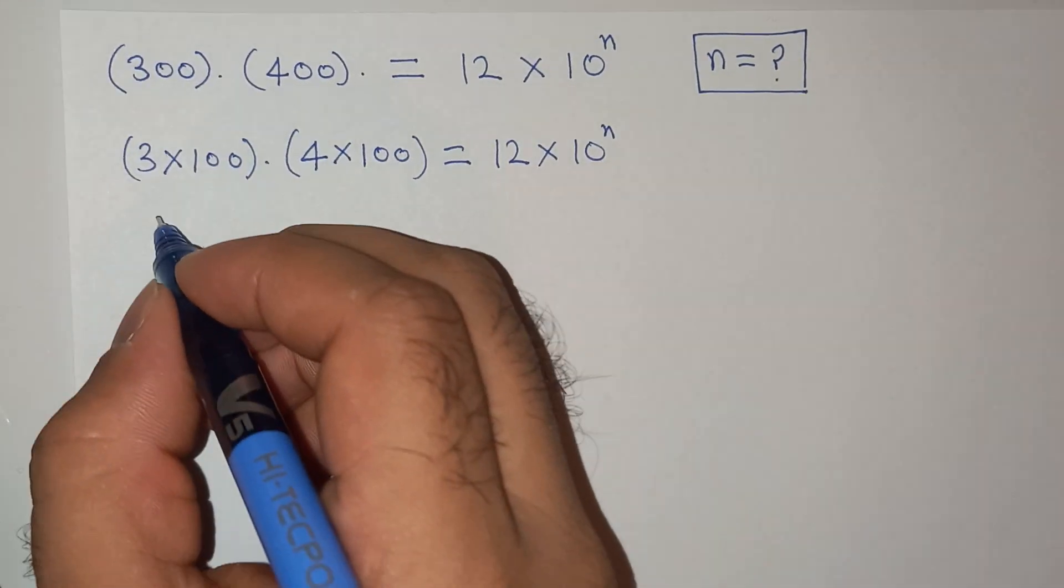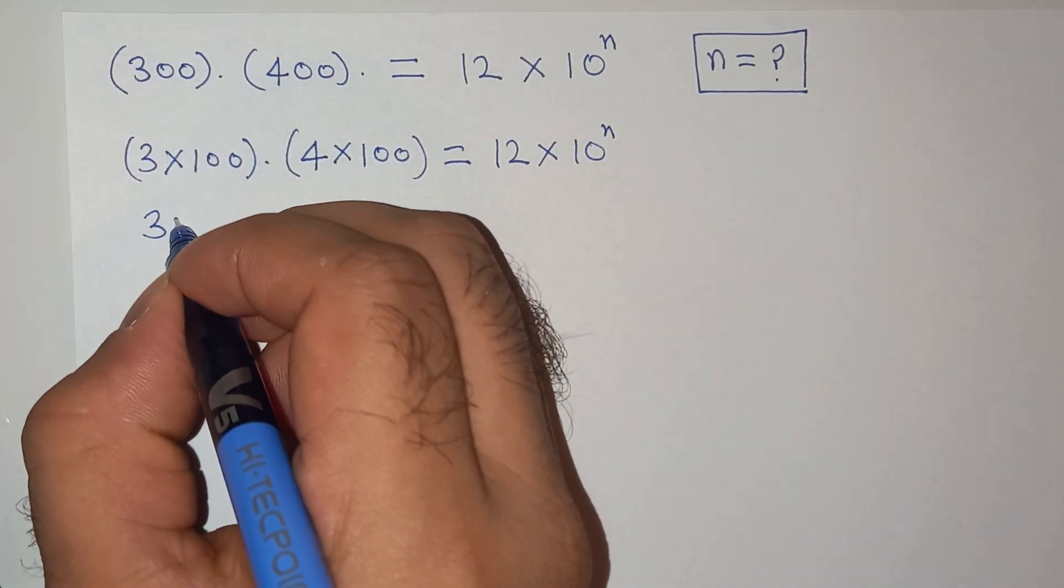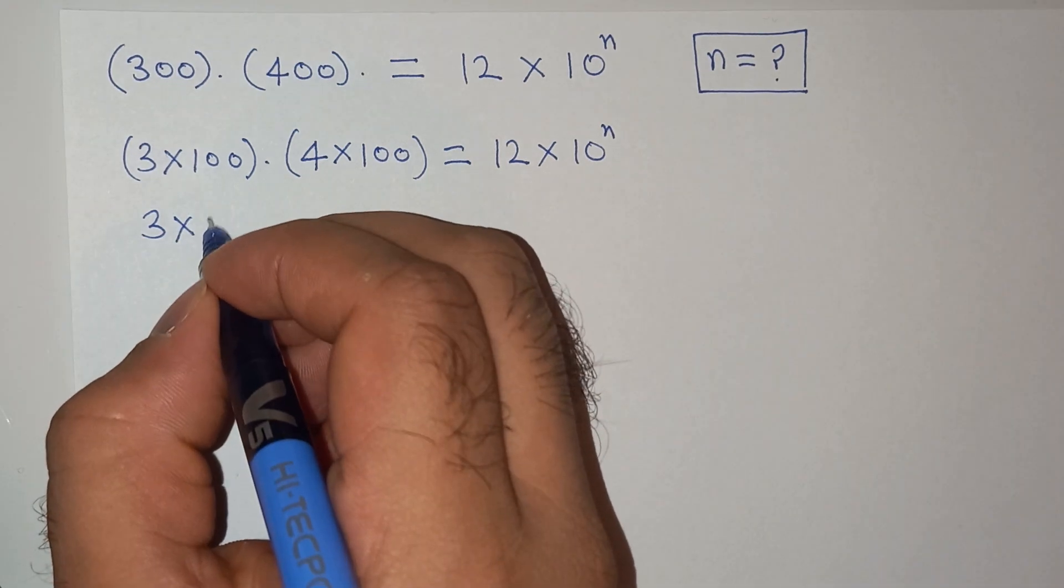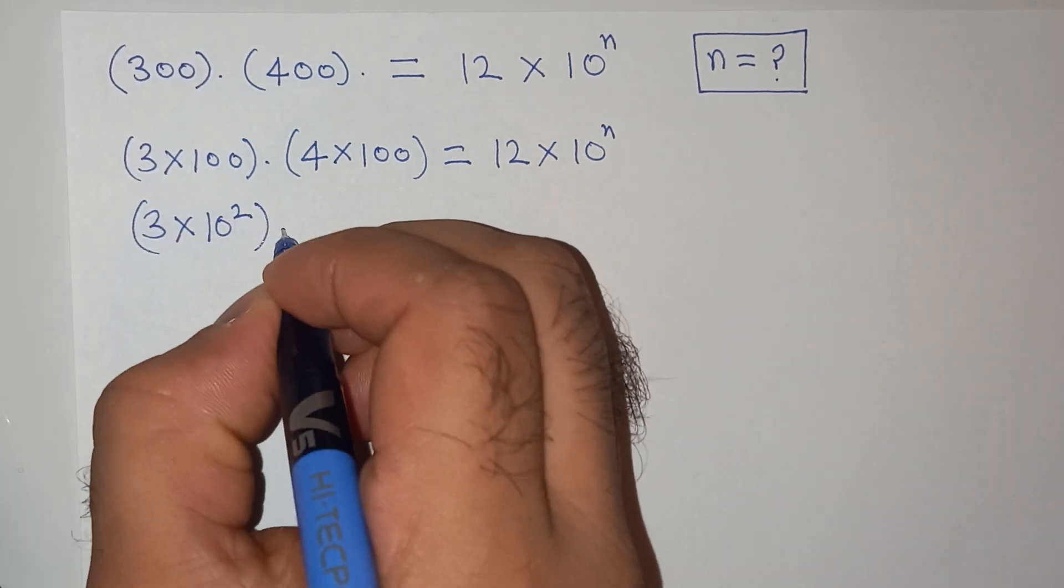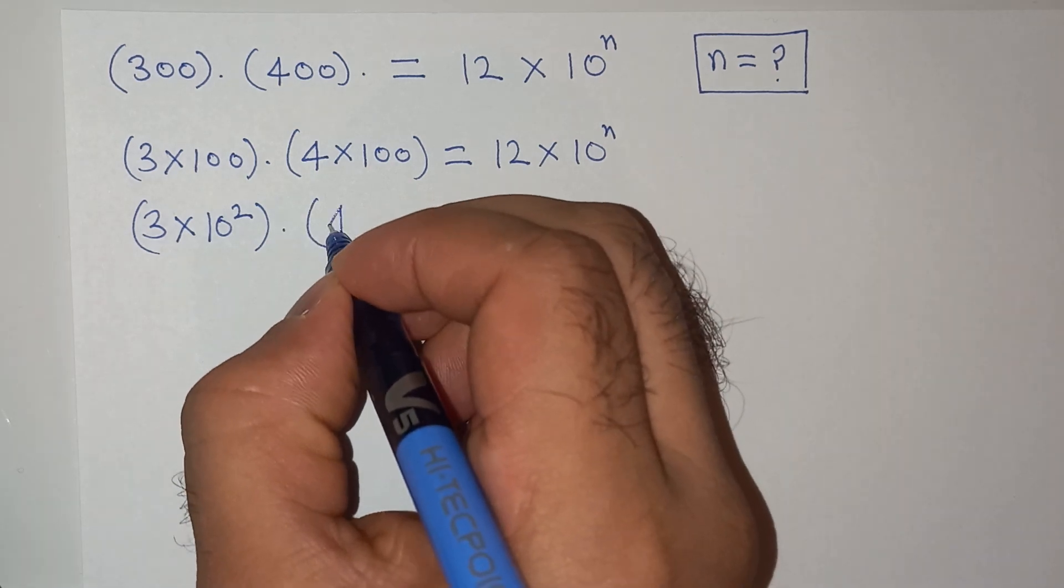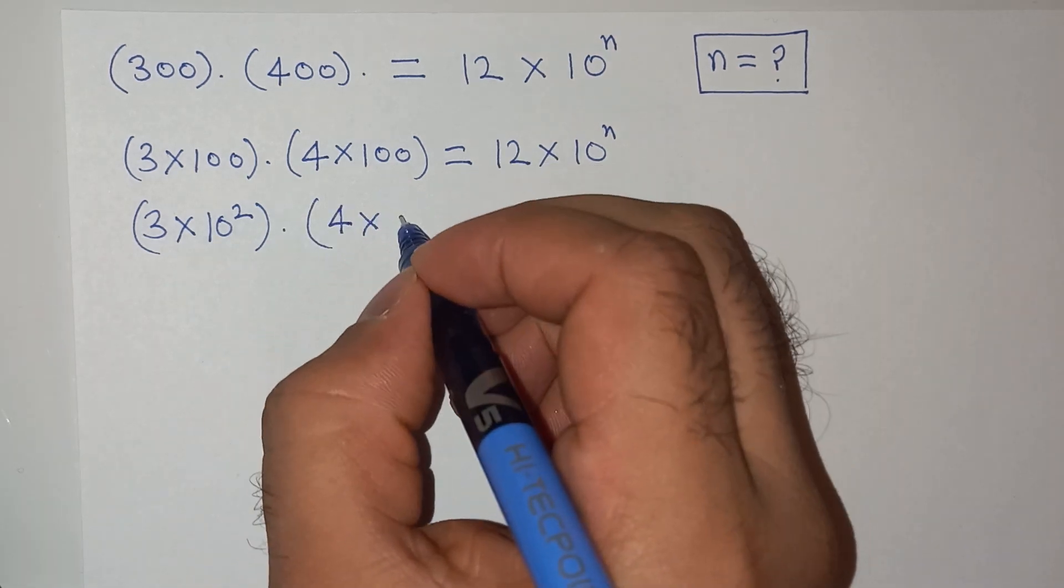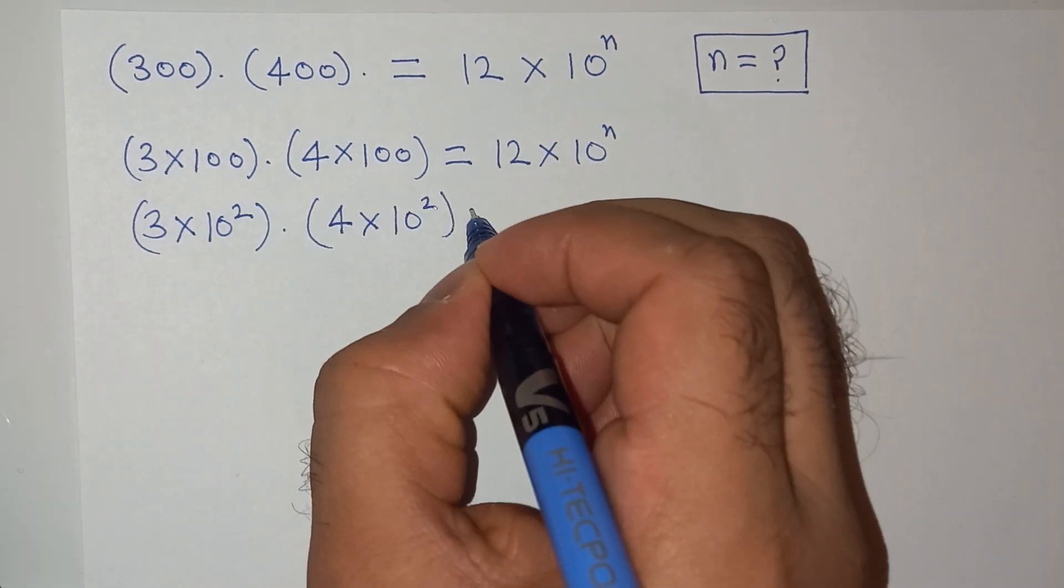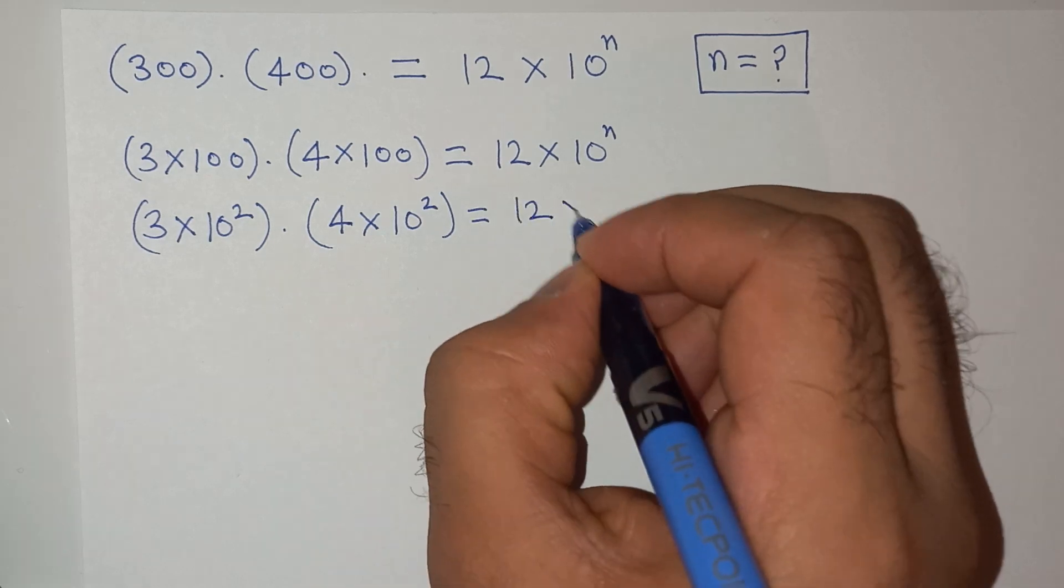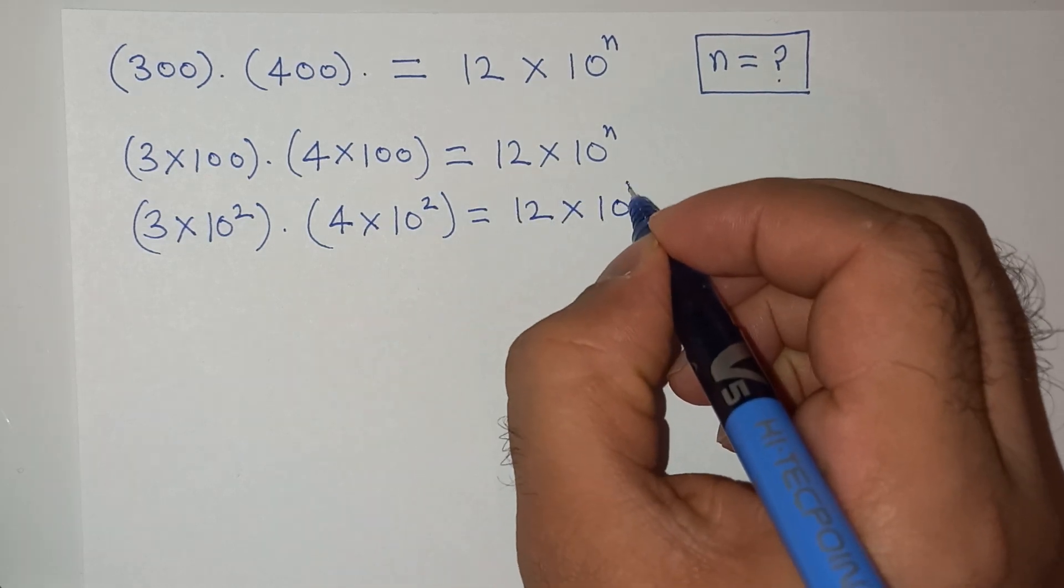Now this 3 multiplied by 100 can be written as 10 square. 4 multiplied by 100 can be written as 10 square, equals 12 multiplied by 10 power n.